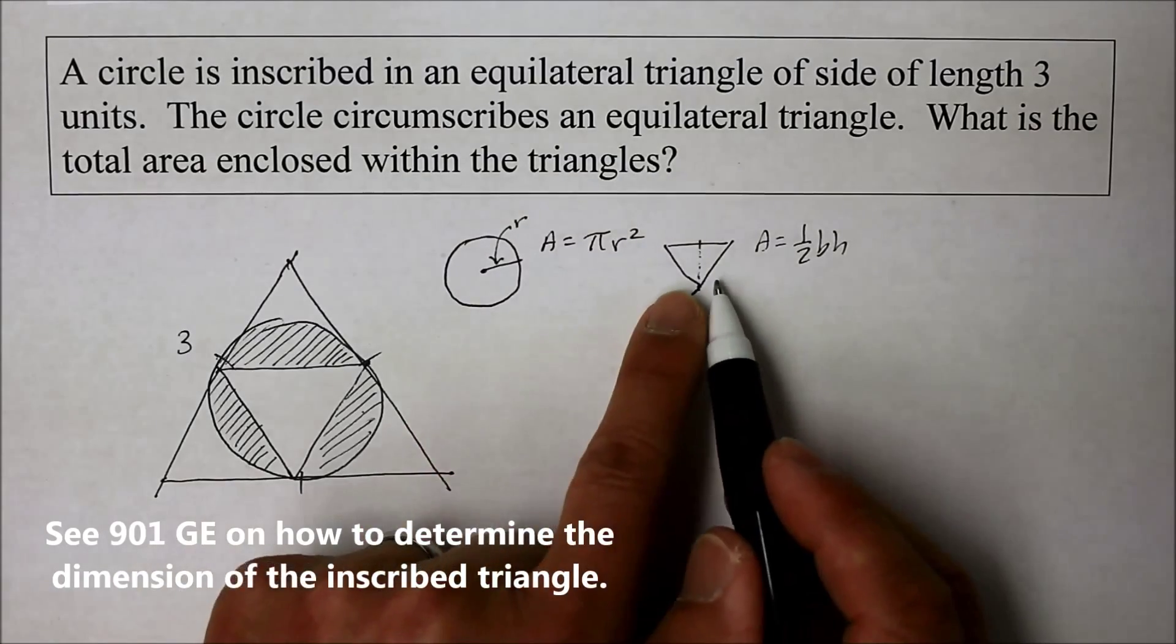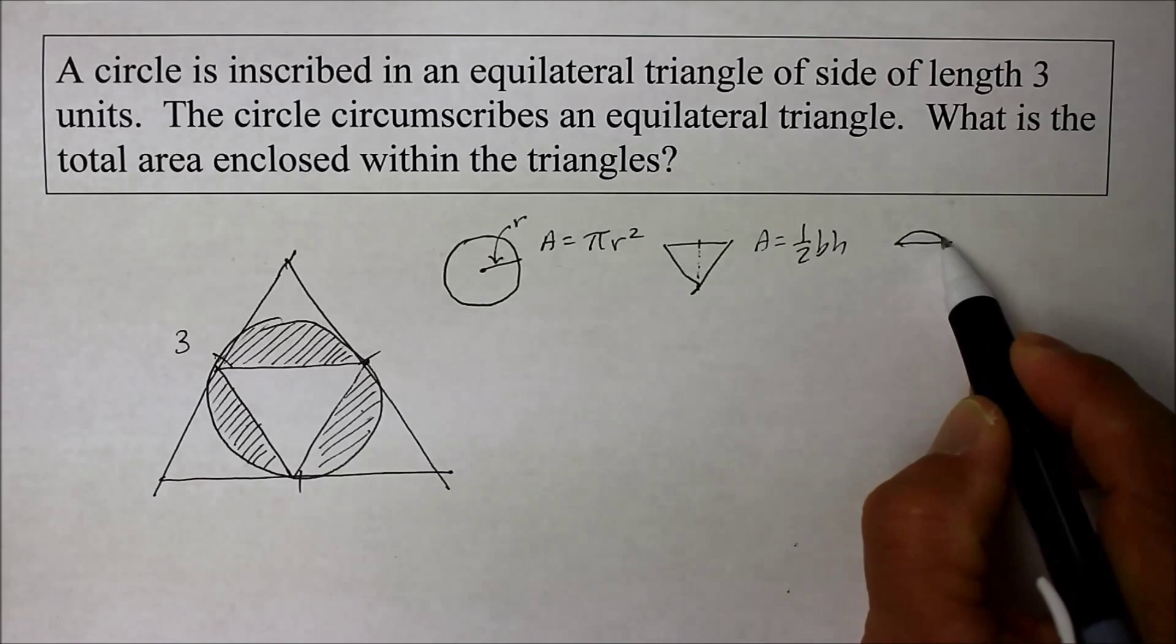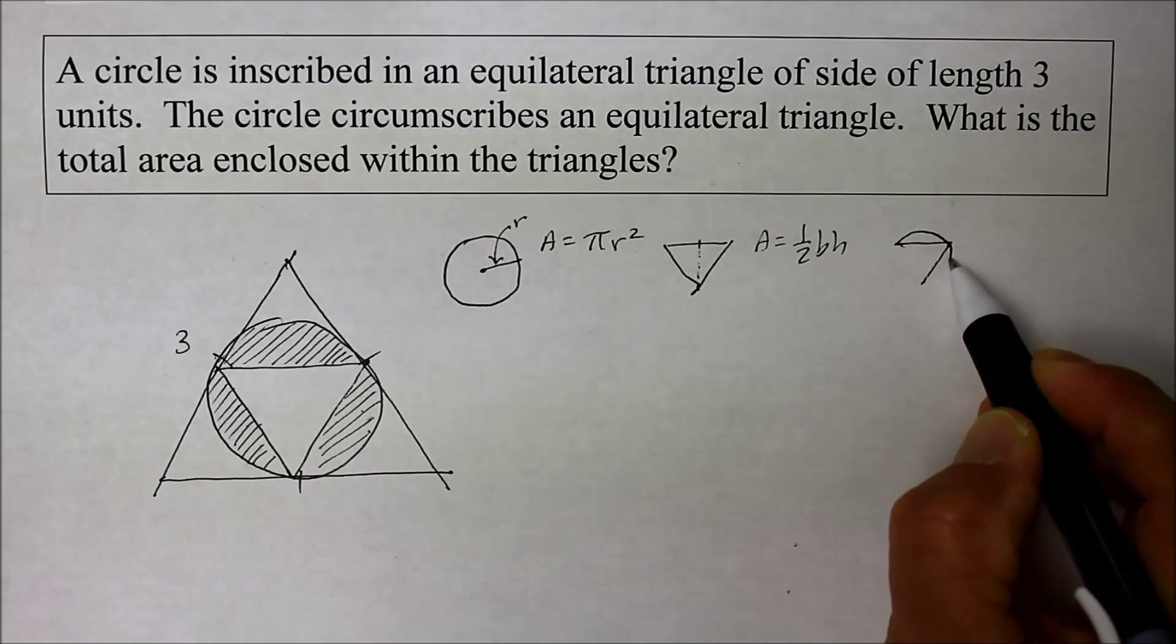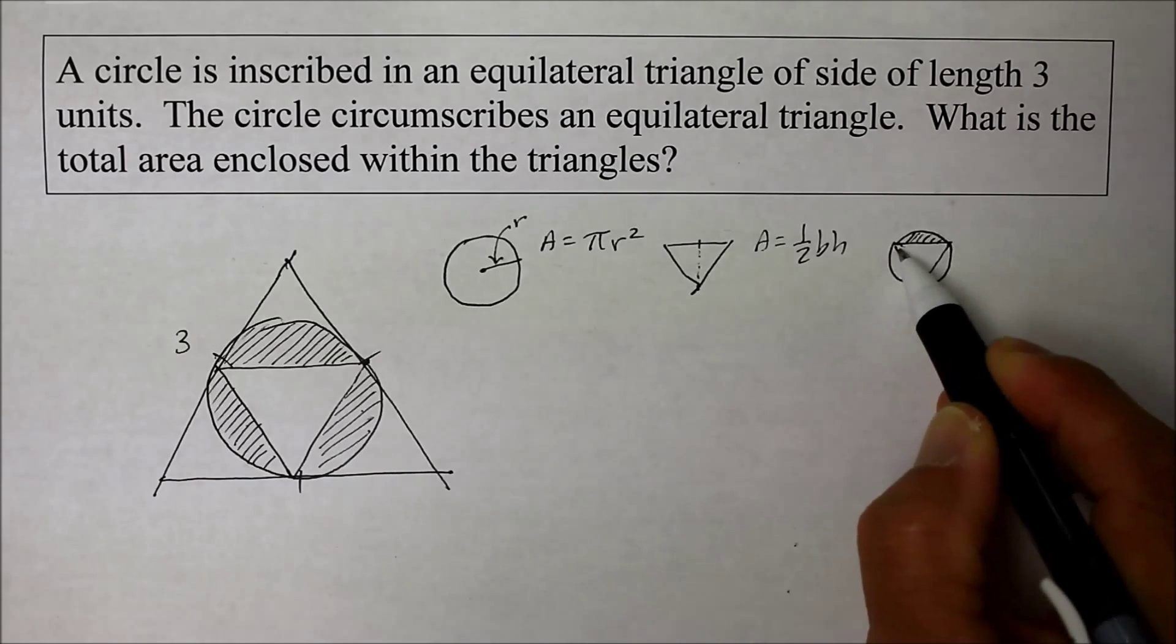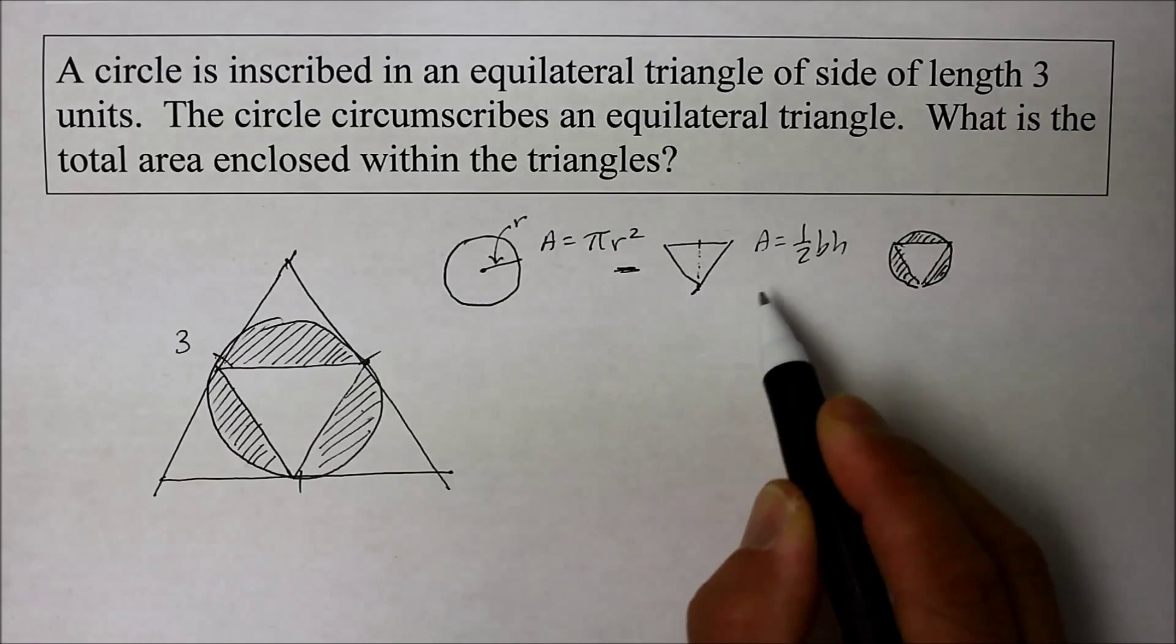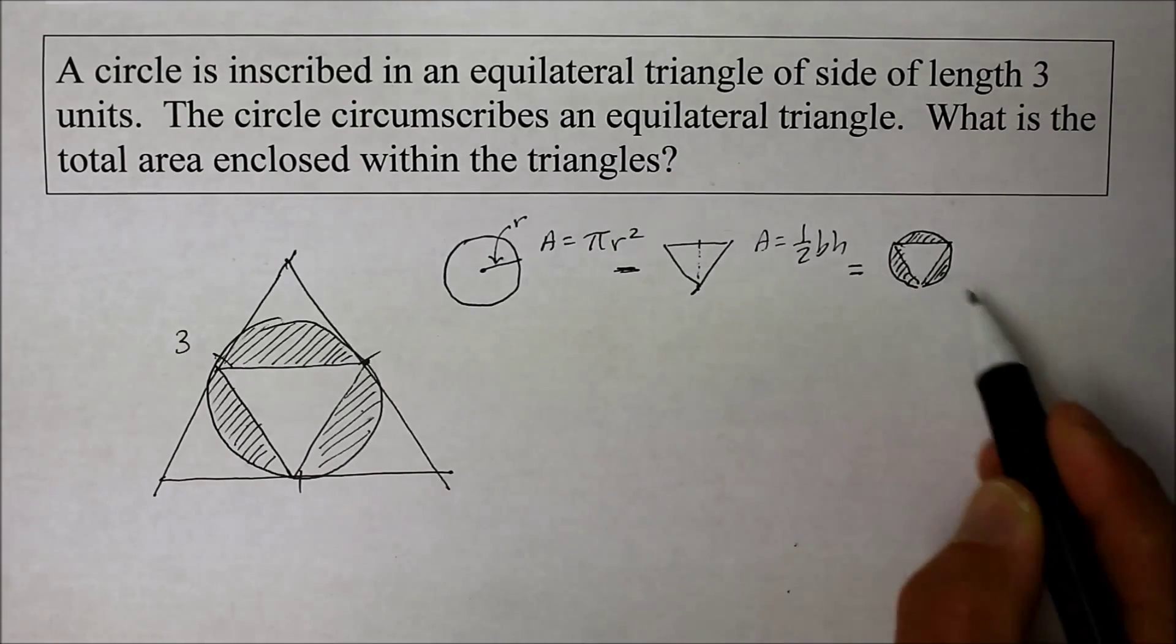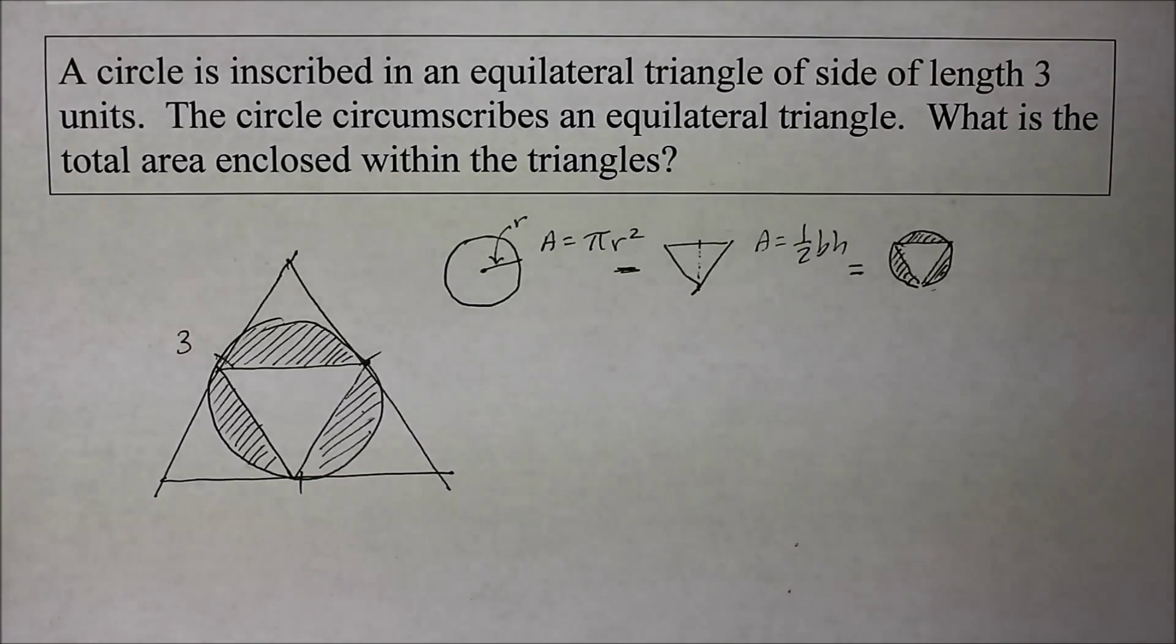And when we subtract the triangle away from the circle, what we have remaining is then the little residual pieces right there. And that is what we're going to find. When we take this, subtract that, we're going to end up with that little shaded region. That's what we're trying to do. Why don't you pause the video and see if you can figure this out on your own? Go ahead, try it.